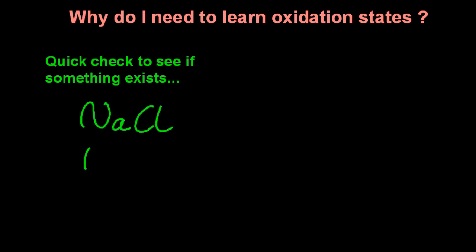For example, sodium chloride has only one chloride ion. Oxidation states will help you determine that.